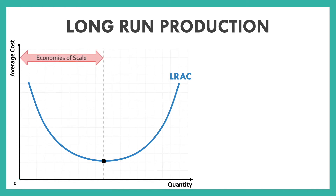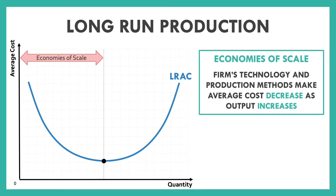The decreasing part on the left is something we call economies of scale — whenever a firm's technology and production methods make it such that the average cost goes down as input increases. Think about big stores like Walmart. They produce so much of their products that they can sell them at such a cheap price because their production methods have allowed them to spread their costs out across so many different products. That's why your average mom-and-pop store has higher prices — they haven't achieved economies of scale because they're producing fewer items, spreading costs over fewer products. The more you make, the lower your average cost per product goes.